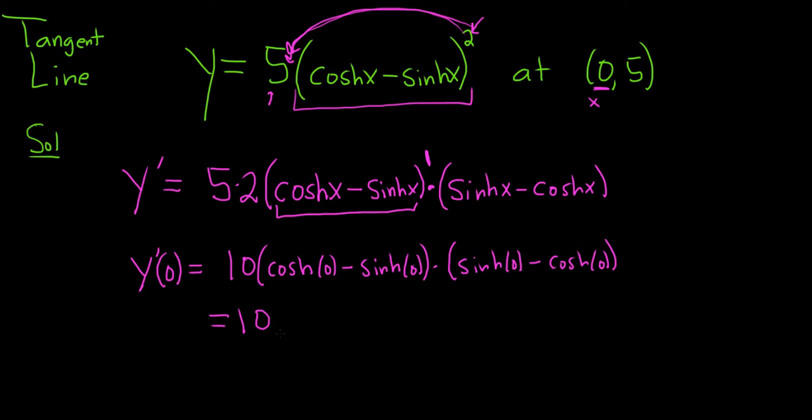So this is equal to 10, cosh of 0 is 1, so we have 1 minus sinh of 0 is 0, parentheses, sinh of 0 is 0, cosh of 0 is 1. So this is 10 times 1, times negative 1, which is negative 10. So this is an accomplishment - this is our slope.